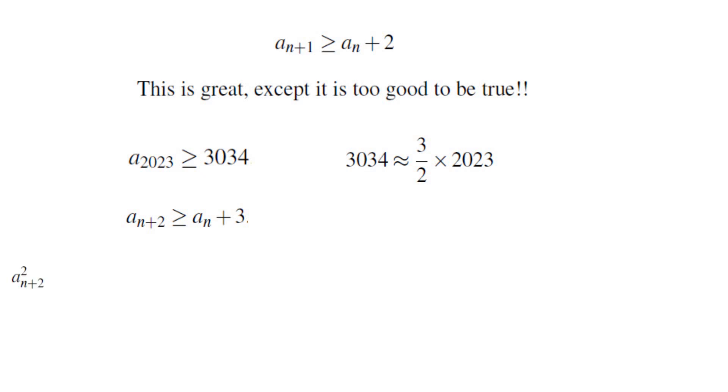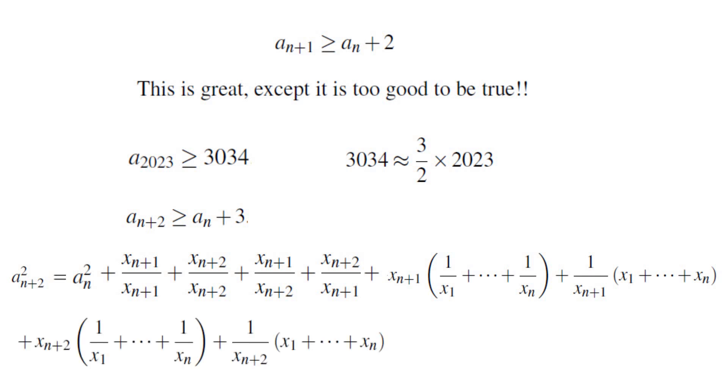There are terms that only have x1 through xn. That would give you aN squared. There are terms that have xn plus 1 and xn plus 2. There are four terms with that characteristic. There are terms that have xn plus 1 and x1 through xn. And these are those terms. And finally, we have terms that have xn plus 2 and x1 through xn.